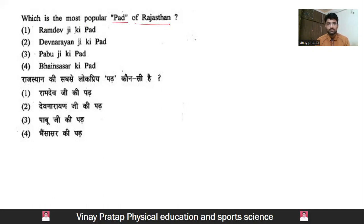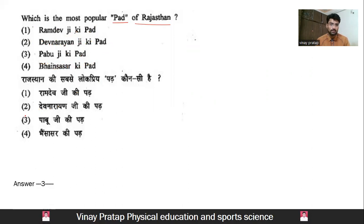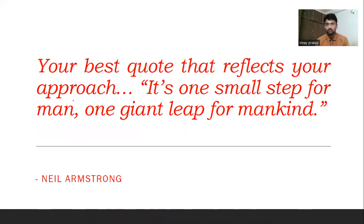Which is the most popular padh (narrative scroll) of Rajasthan? There are many famous padhs in Rajasthan, and you have to pick the most important one. The options are Ramdev ji ki padh, Dev Narayan ji ki padh, Pabuji ki padh, and Vaisakha ki padh. Among these, the most popular padh is Pabuji ki padh — answer number three is correct.